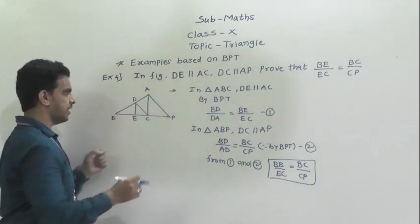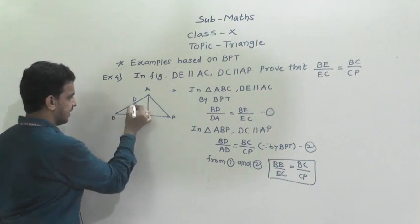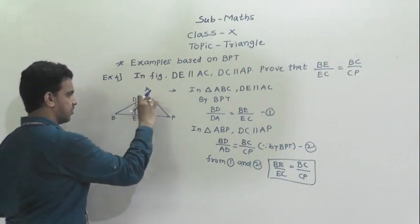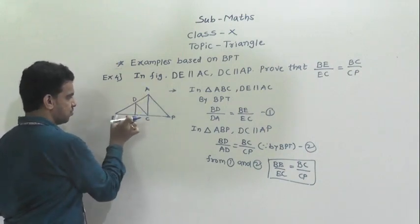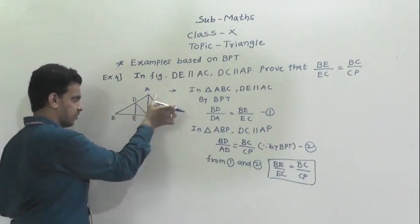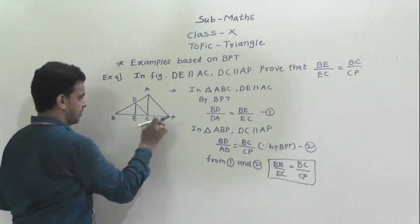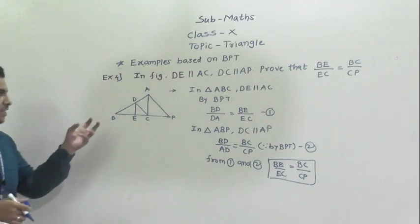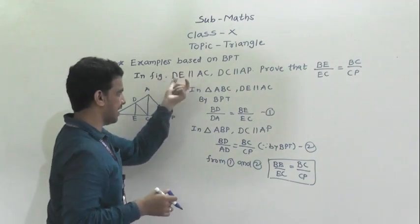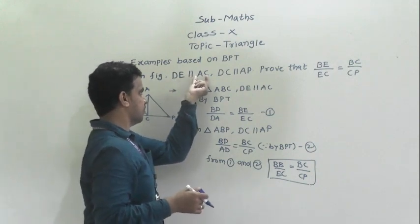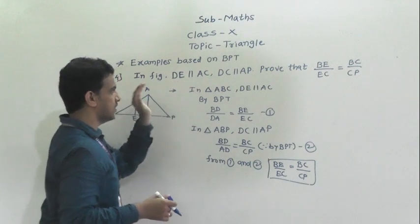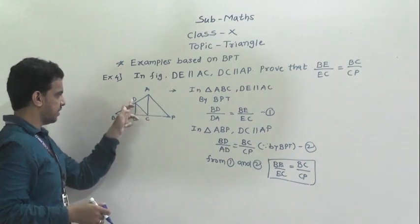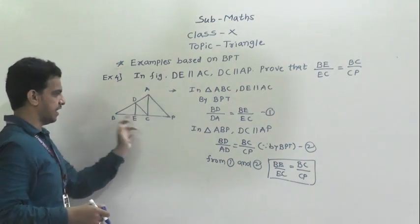When using BPT, first see which line or side is parallel to which segment, then take that triangle. Here DE is parallel to AC, so we take triangle ABC. DC is parallel to AP, so we take triangle ABP. BD by AD equals BC by CP.